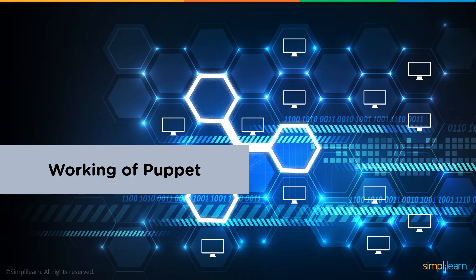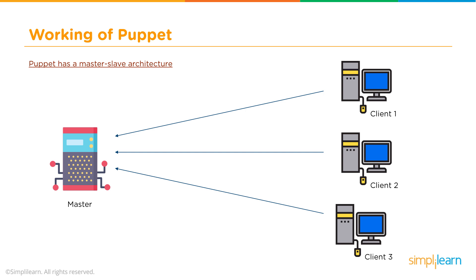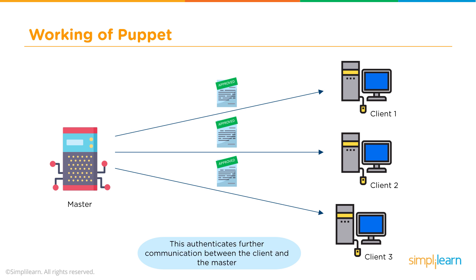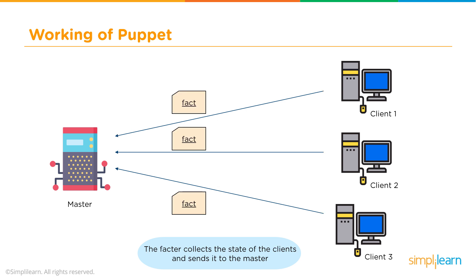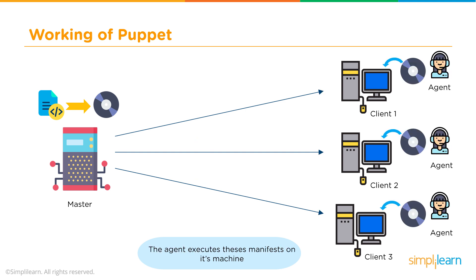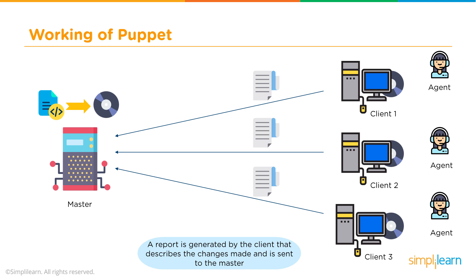Let's step through the workings of Puppet. The Puppet environment is a master-slave architecture. Clients are distributed across your network and constantly communicate back to a master server where your Puppet modules live. The client agent sends a certificate with the server's ID to the master, which signs and returns it — this authentication allows for secure, verifiable communication. The factor then collects the state of the client and sends it to the master. Based on those facts, the master compiles manifests into catalogs, which are sent back to the clients and executed by the agent. A report is generated describing any changes made, sent back to the master so it has full understanding of the hardware and software running in your network.